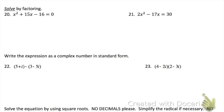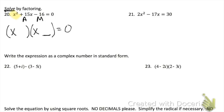Problem 20 says to solve by factoring. Since it says solve, your final answer is X equals a number and X equals another number. This is easy factoring because A is 1 — it just starts with x squared. Figure out what multiplies to negative 16 and adds to 15. Once you have those numbers, write x plus something and x minus something, then set each equal to 0, solve for X, and you'll get two answers.